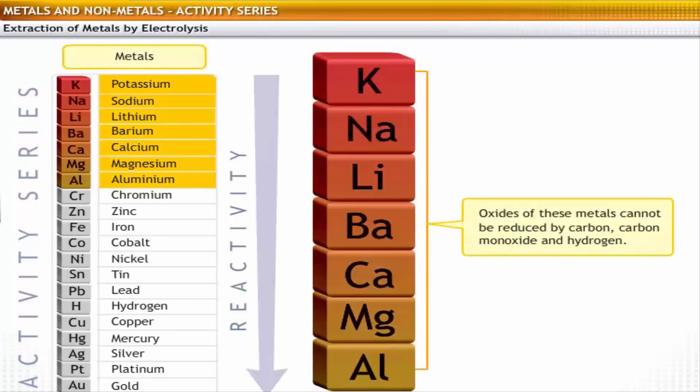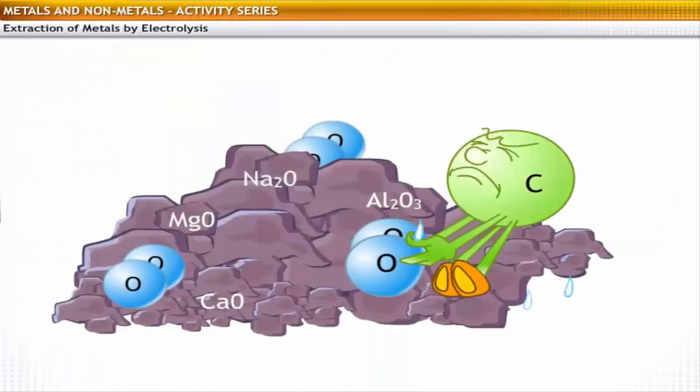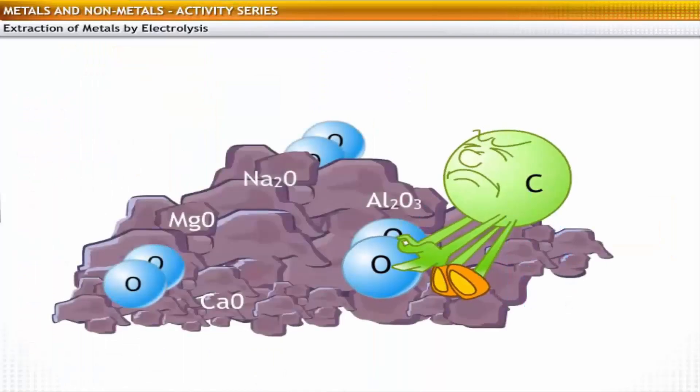The metals high up in the activity series are very reactive. Hence, they cannot be obtained from their compounds by heating with common reducing agents like carbon, carbon monoxide and hydrogen.